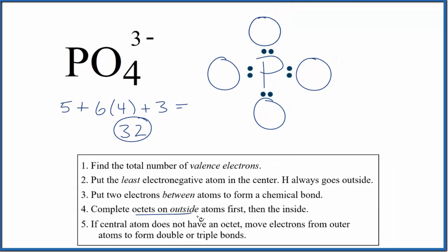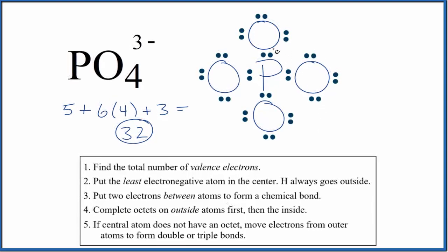Next we'll complete the octets on the atoms outside of the central atom. So at this point, we have eight electrons for the phosphorus. Each oxygen has eight valence electrons, and we've used all 32. So this is a pretty good Lewis structure for PO4 3 minus.